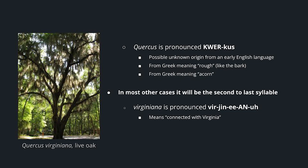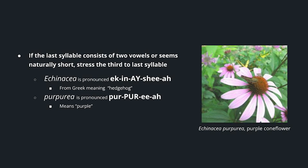Here's Quercus virginiana. Quercus is a two-syllable word — QUERcus — of unknown origin, either from an early English language, a Greek word meaning rough describing the bark, or a Greek word meaning acorn. In most other cases, it will be the second-to-last syllable that is enunciated, as in virGINiana. That's our live oak, Quercus virginiana. If the last syllable consists of two vowels or seems naturally short, you stress the third-to-last syllable. Here we have Echinacea from the Greek meaning hedgehog, describing the spiky inflorescence of the flower, and purpurea describing the petal color — so we have echINAcea purPURea, which is our purple coneflower.